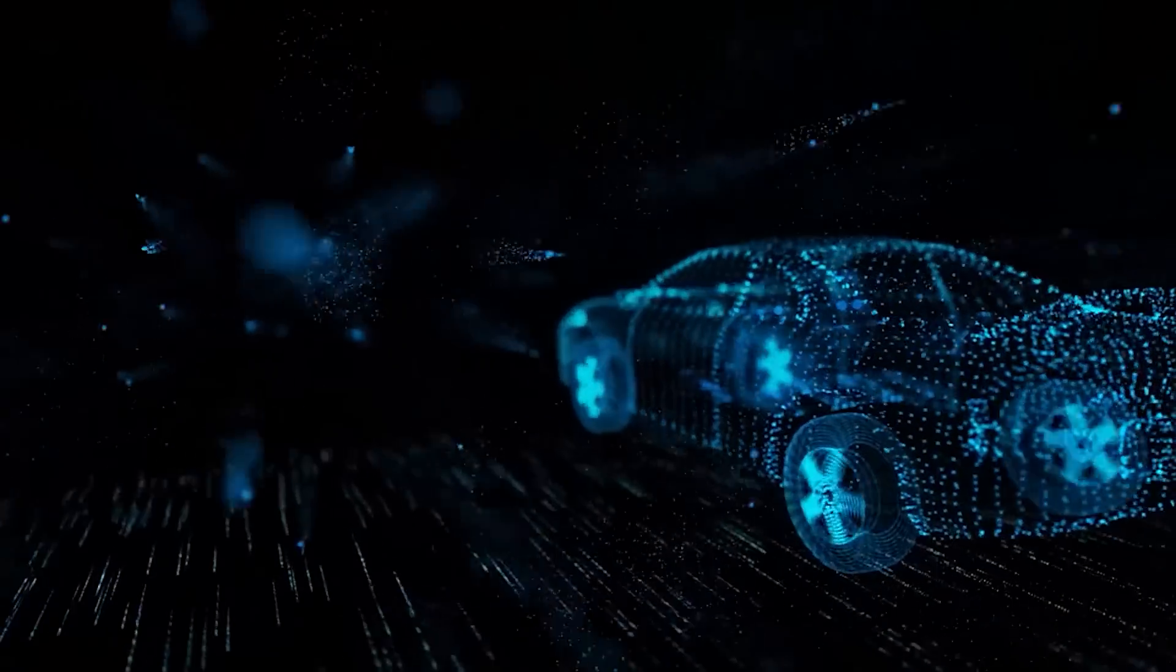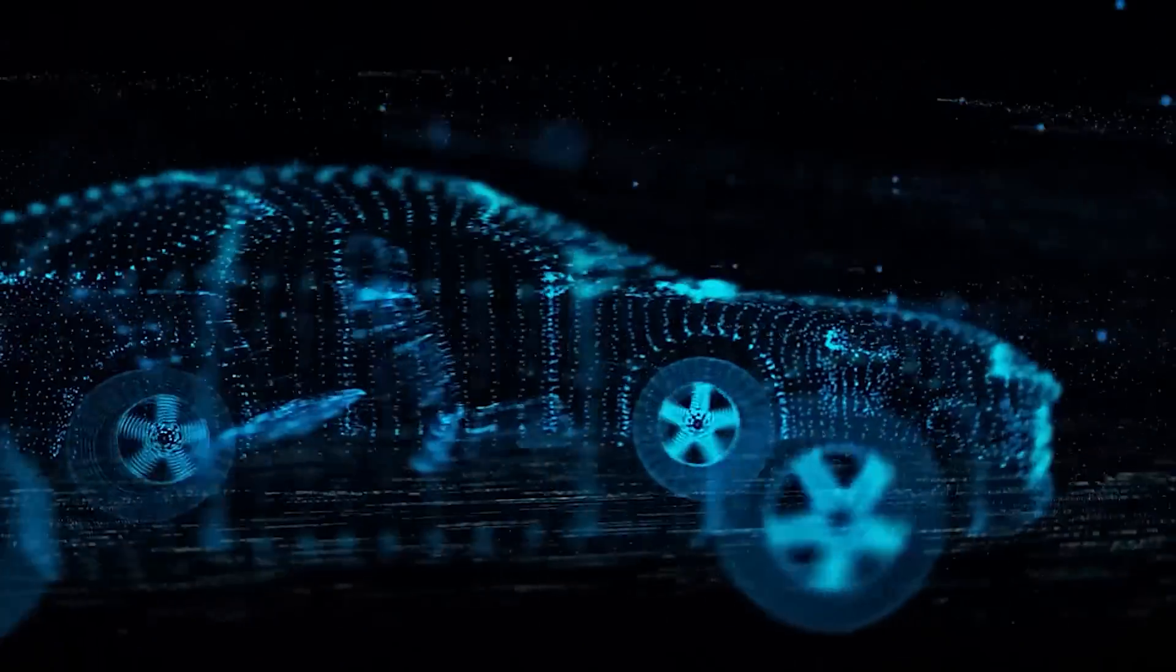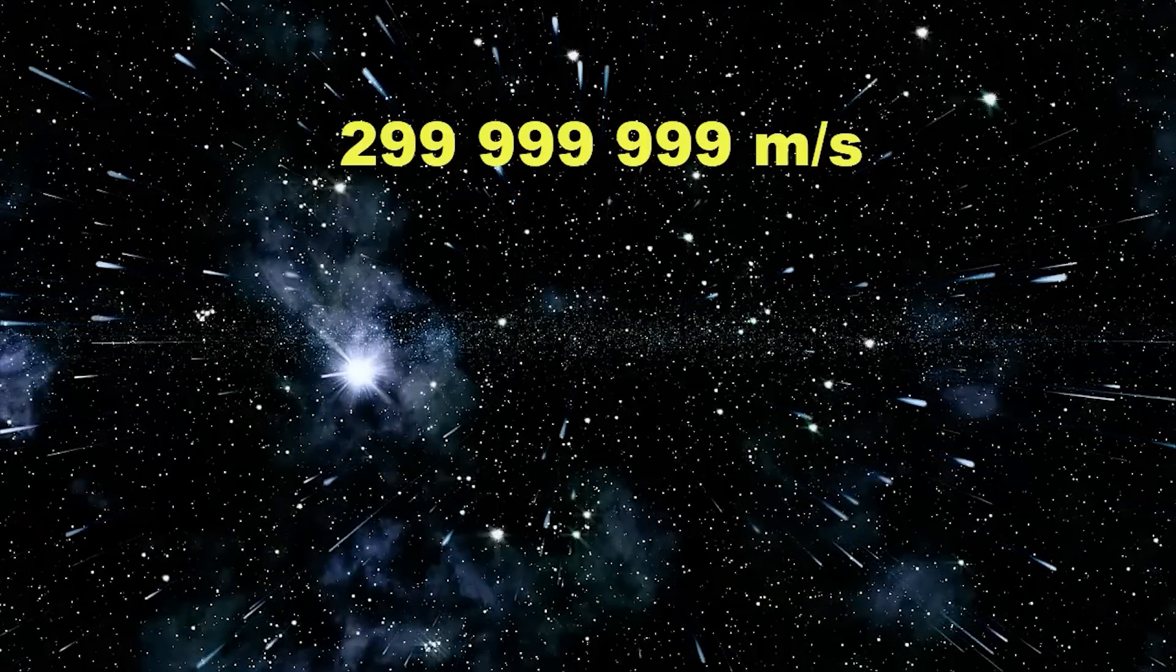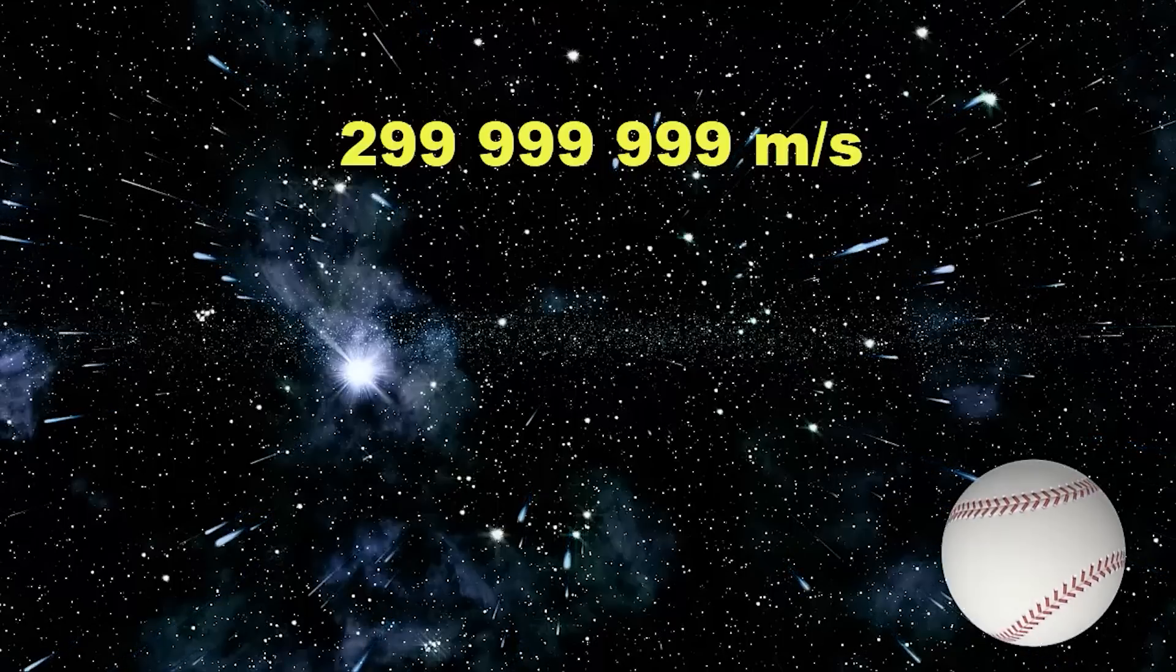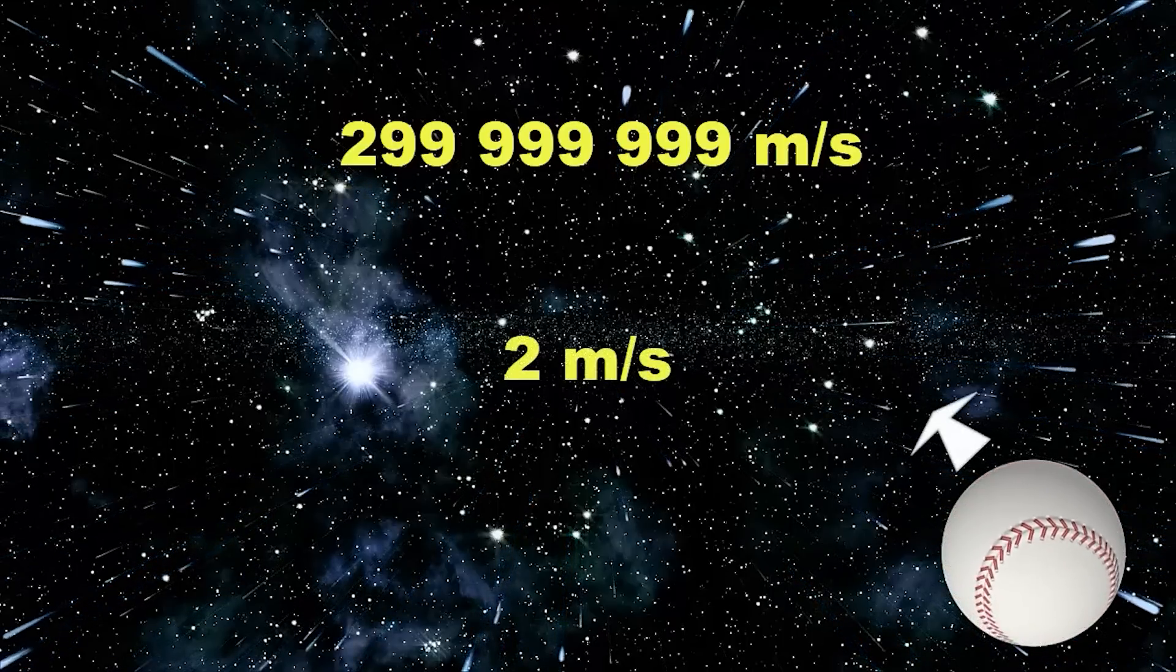Imagine the following scenario: you sit in the backseat of a car that is traveling at one meter per second below the speed of light. You have a baseball in your hand that you throw forward at two meters per second.